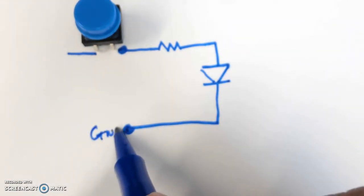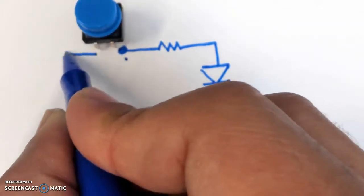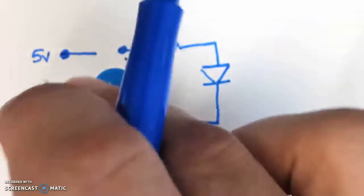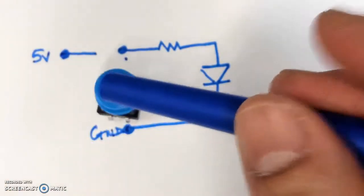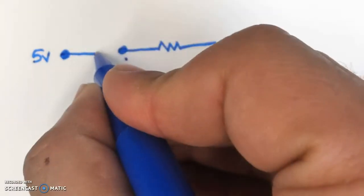This will still be the ground pin but instead of this being the 5 volts, we're going to connect 5 volts to this side. This is a push button switch so it's normally open. When I press the switch, the switch gets pressed.